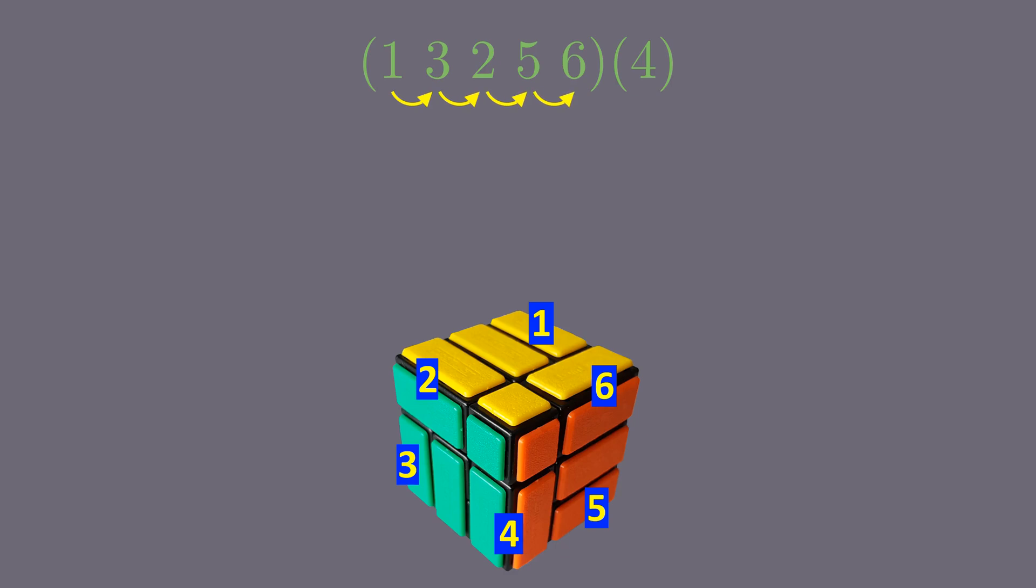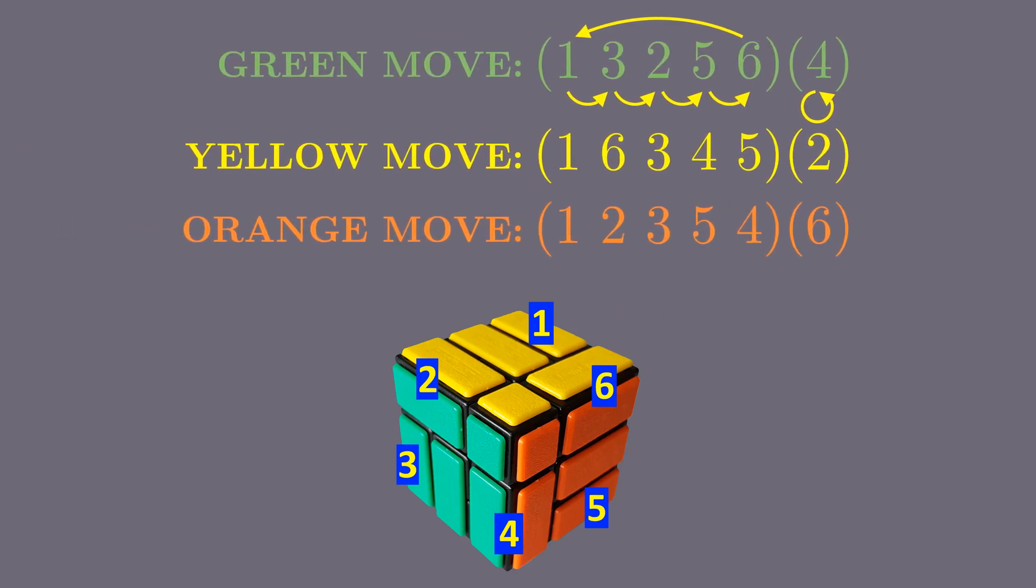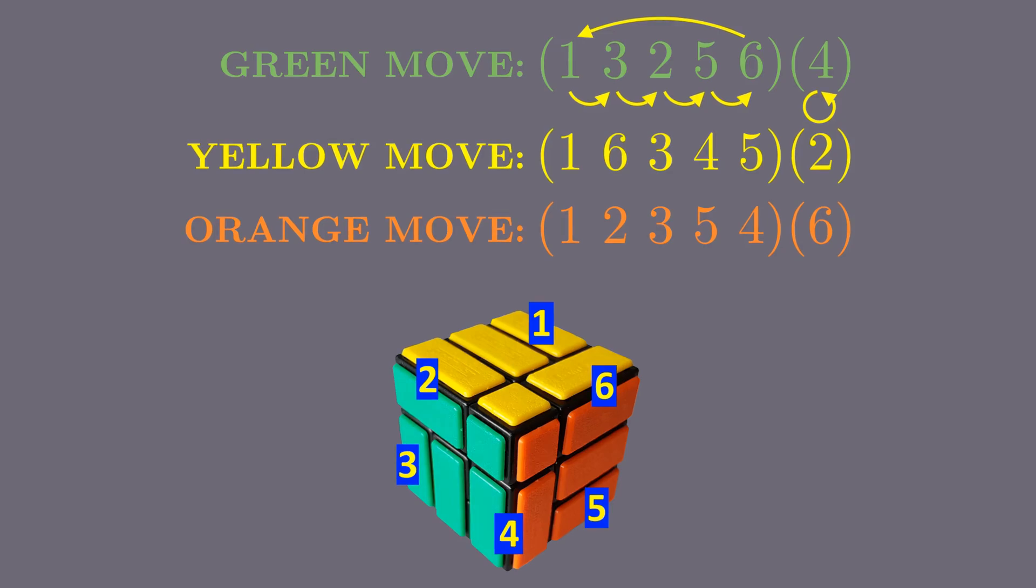Last block moves to where first block was, and one block stays in place. The rotated moves result in rotated cycles. We'll call these the green move, the yellow move, and the orange move, based on face color of their starting turn.